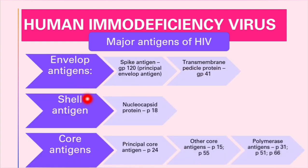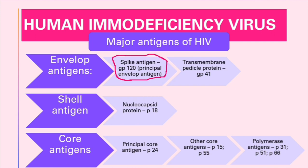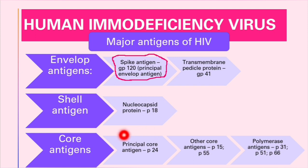Now let's talk about the major antigens of HIV: envelope antigens, shell antigens, and core antigens. For envelope antigens we are mainly talking about the spike antigens — that's gp120 — and also there is a transmembrane pedicle protein, that's gp41. For shell antigens we have nucleocapsid protein, that's p18.